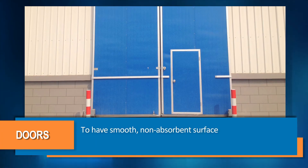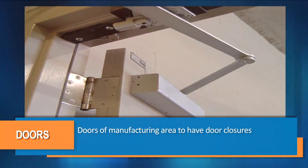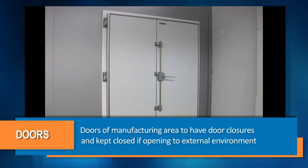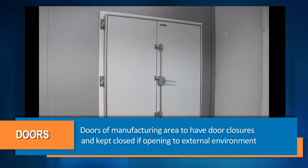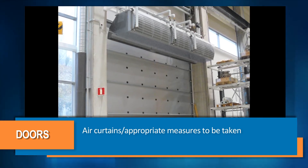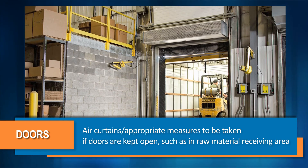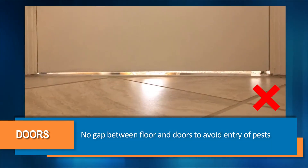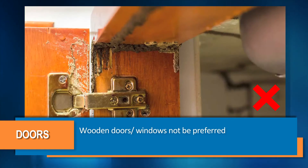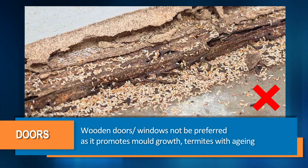Doors shall have smooth, non-absorbent surfaces with no flaking paint or signs of corrosion. Doors of the manufacturing area should have door closures fitted and kept closed if opening to external environment or to contaminated areas. Air curtains or other appropriate measures should be taken if doors are kept open, such as in raw material receiving areas. There shall be no gap between the floor and doors to avoid entry of pests. Wooden doors or windows should not be preferred as they promote mold growth and termites with aging.